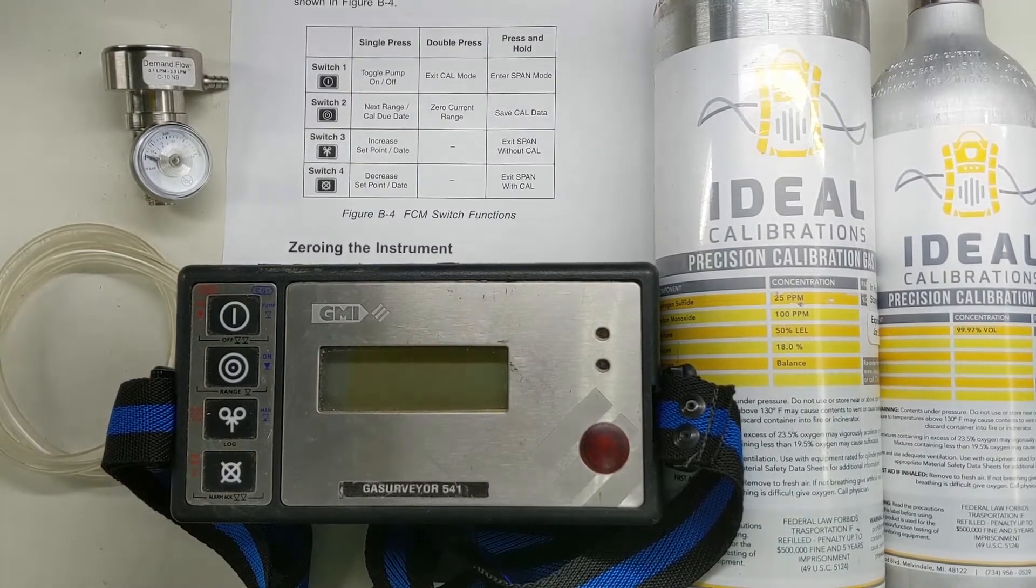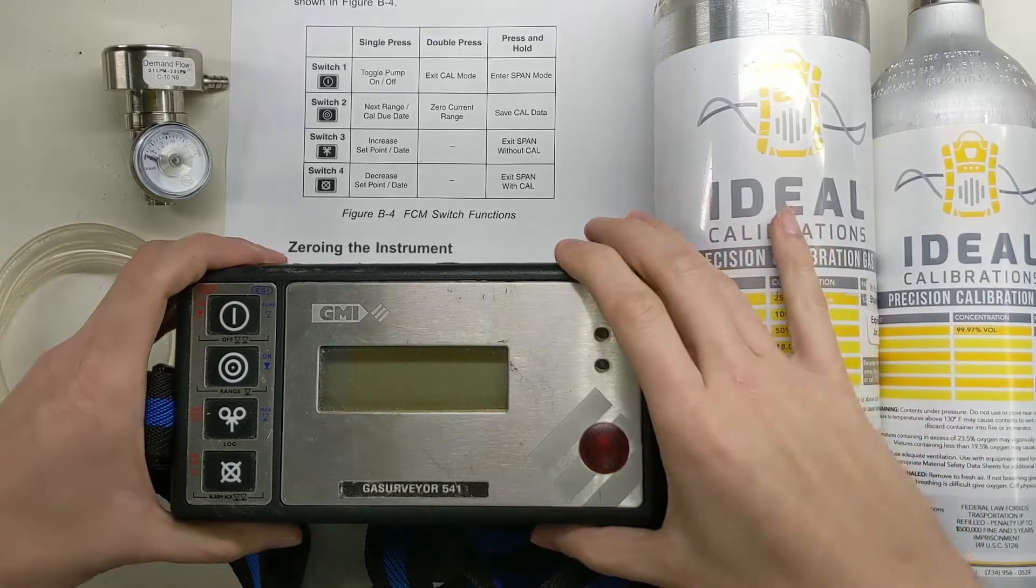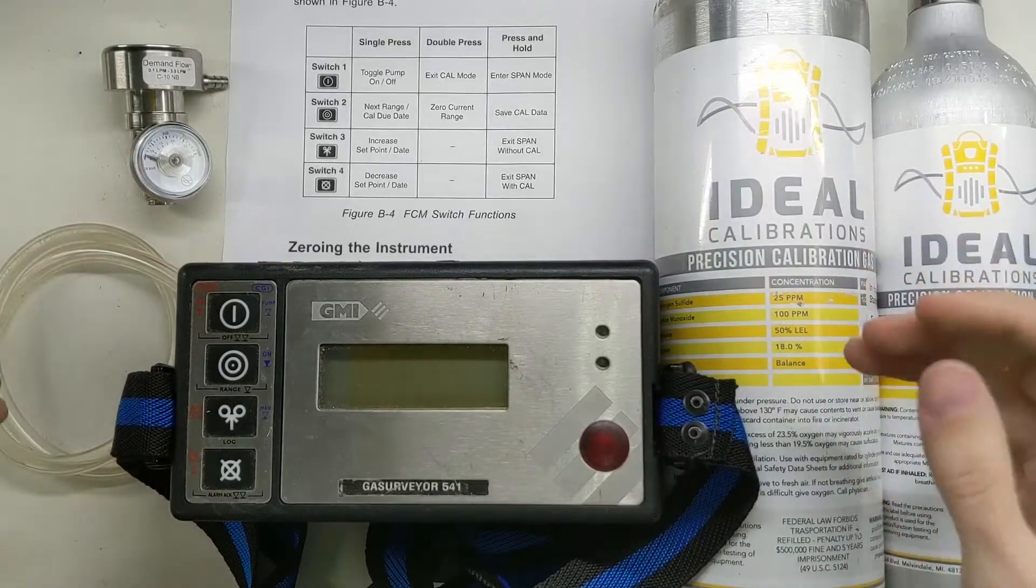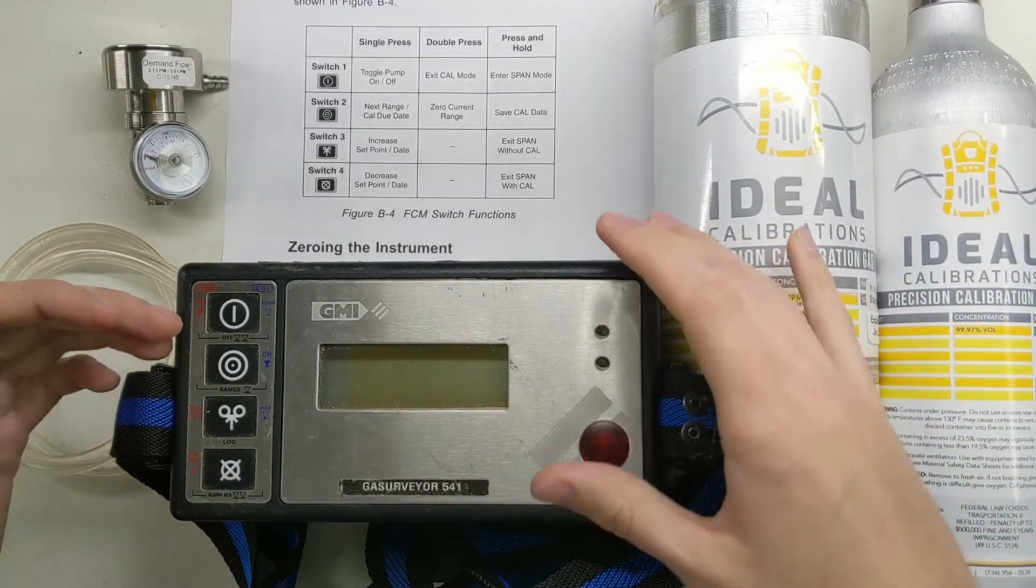Hi and welcome to the Ideal Calibrations How to Calibrate your Gas Detector Series. We're going to be looking today at the Gas Surveyor 541 by GMI. This is usually a pipeline unit. You'll see a lot of these in use. It's a bit of a unique model.